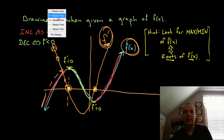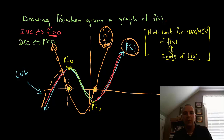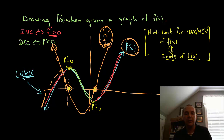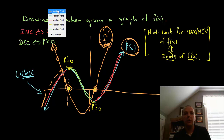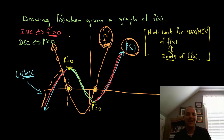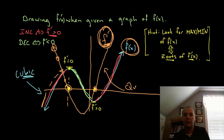One last thing to convince you the graph is correct: if you look at the blue graph, this kind of looks like a cubic. If you're familiar with basic quadratics, cubics, and linear functions — this goes up, down, up. That just looks like a cubic. Now what would the derivative of a cubic function be? Something that has x to the third would give something with x squared. Well, look at the orange graph — the graph of the derivative. Doesn't that look like a quadratic? It does, and that further confirms that this really is the graph of f prime.